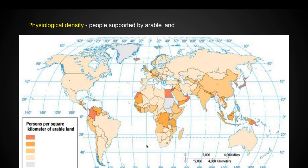Looking specifically at physiological density — people supported by arable land — we have the Nile River in Egypt. That one fertilized and irrigated strip of land has to support the entire dense population of Egypt, which is why physiological density is so high. Same thing in Colombia, where dense jungle lands mean only small amounts of farmable land have to support a large population.